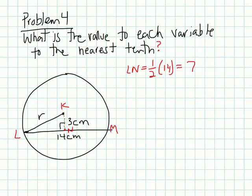Okay, problem four. What is the value of each variable to the nearest tenth? So what we're looking at is in circle K, we see that this is perpendicular to this chord LM. And since it's perpendicular, we know that it's going to bisect it. So meaning each side is going to be 7. This is going to be 7 from here to here, and this is going to be 7 from here to here. So the total is 14.